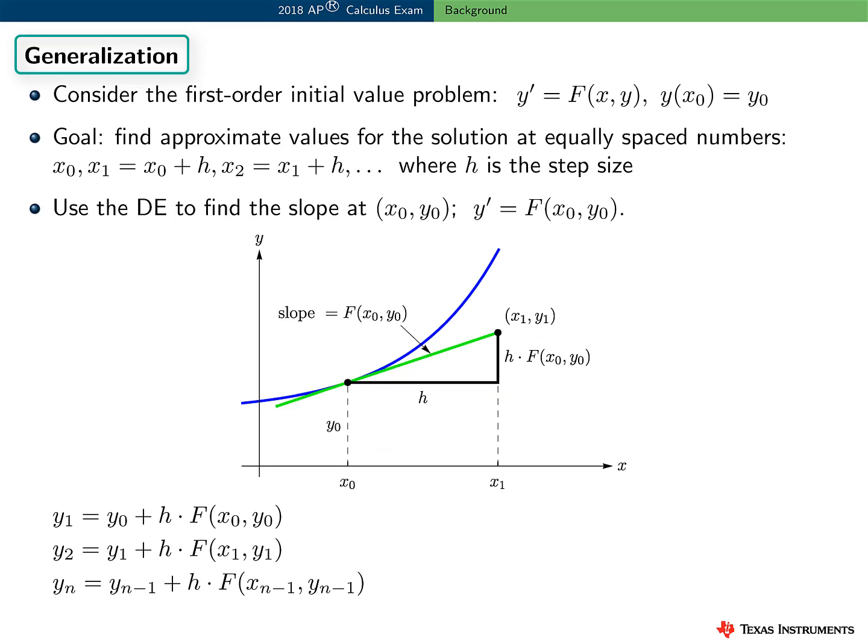Here's how we generalize this method. Consider the first order initial value problem: y prime equals f of x, y, with y of x sub 0 equal to y sub 0. Our goal is to approximate values for the solution at equally spaced numbers, x0, x1 equal to x sub 0 plus h, and so on, where h is the step size. We use the differential equation to find the slope at x sub 0, y sub 0. This figure illustrates the first step in Euler's method, and we continue in this manner to find y sub n.